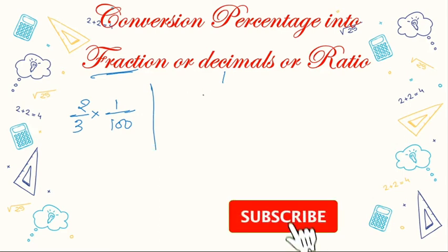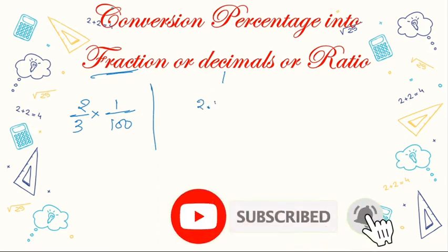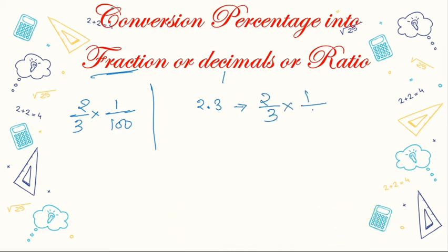Similarly, if you want to convert a decimal like 2.3 back from percentage, first convert it to a fraction, then divide by 100. In this way you can convert fractions, decimals, and ratios to and from percentage.